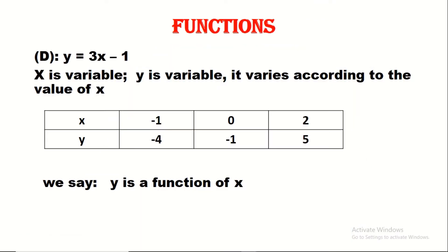If we have, for example, a straight line D of equation y equals 3x minus 1, here we can say that y is a function in terms of x. x and y are variables. However x varies, y will vary. If we take, for example, x equals minus 1, note that 3 times minus 1 gives us minus 3, minus 1 gives us minus 4, so y will be minus 4. Also, if x equals 0, y will be minus 1. If x equals 2, y will be 5. So however x varies, y will vary. We say that y is a function in terms of x.